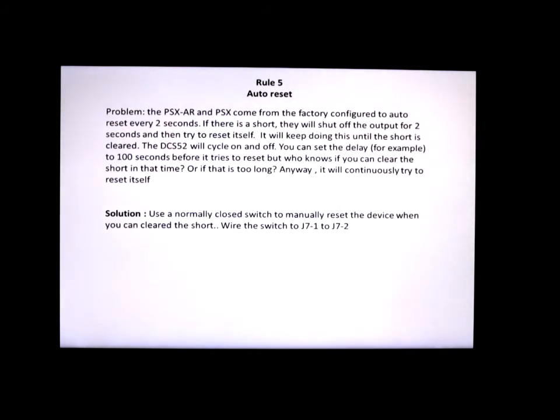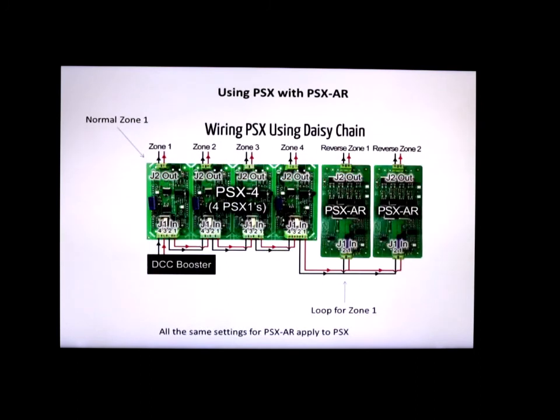You know, so I thought the easiest way to do this is to use a normally closed switch to manually reset the device when you want to. I wired the switch, as it says in the instructions, from terminals 1 and 2 on terminal strip J7. When you do that, and the product trips, it'll stay tripped and it'll only reset after you press the button. So, that way you don't have to have it keep auto-resetting every two seconds or waiting a long time.